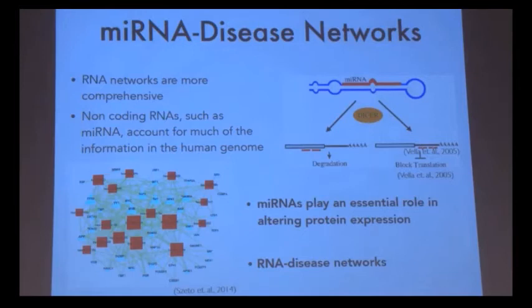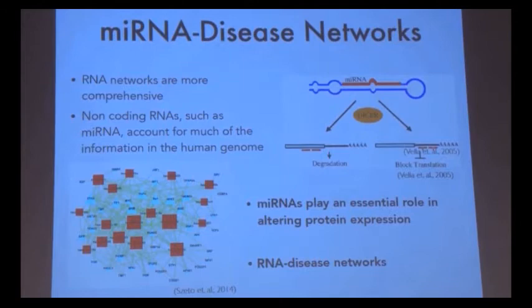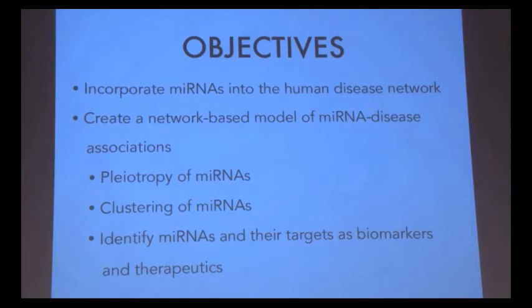So why are RNA-to-disease networks important? Unlike the incomplete protein interactome, RNA networks are more comprehensive, owing to the availability of RNA sequence information. Non-coding RNAs, in particular, such as micro-RNAs, account for much of the information encoded in the human genome. Micro-RNAs, a type of non-coding RNA, are essential in protein expression through post-transcriptional regulation and RNA silencing.